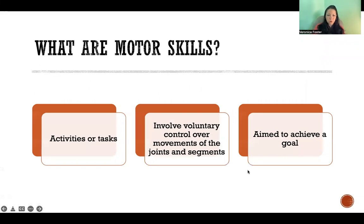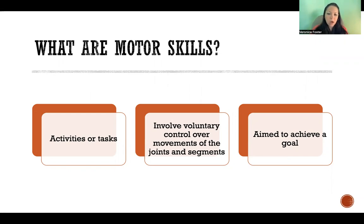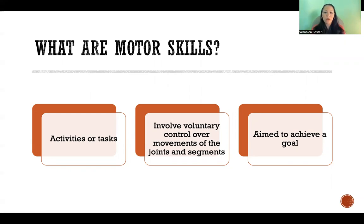Motor skills are activities or tasks that we're using or participating in to achieve a goal with some kind of purpose. It also must involve voluntary control over movements of the joints and segments of the body. So a motor skill is some kind of task where we are achieving a specific goal by voluntarily moving and coordinating the body.